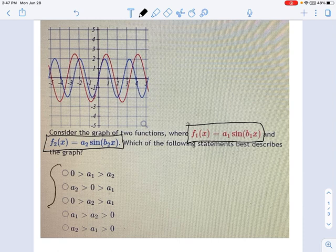So here are our statements, and if you look at these statements, they're inequalities. They tell you a2 is bigger than a1 is bigger than 0, or maybe a2 is bigger than 0 is bigger than a1, or all sorts of statements. And we have to figure out which one of these statements is right.